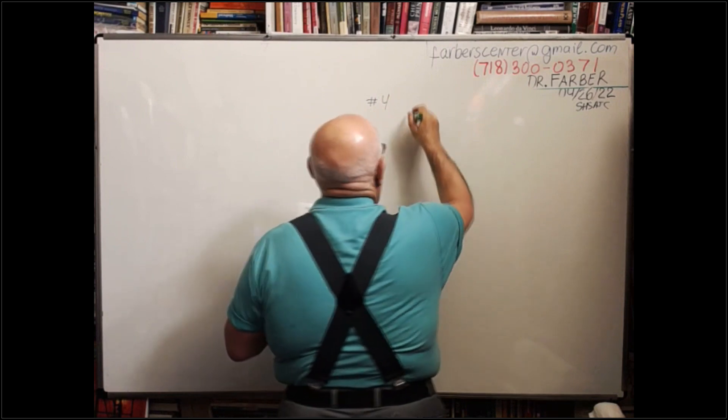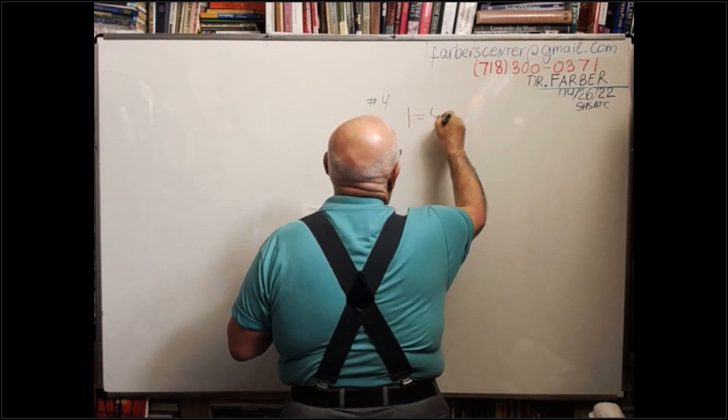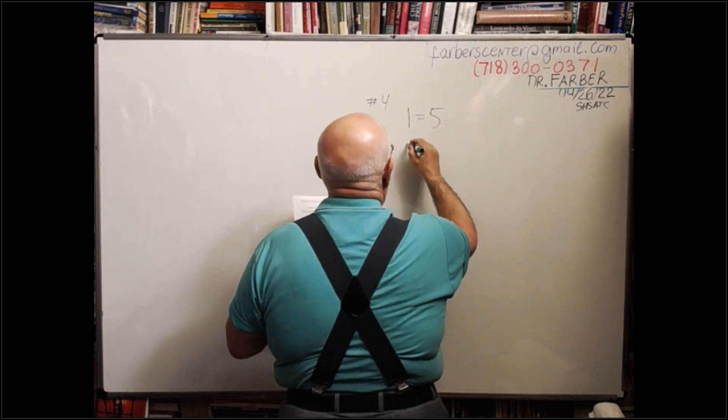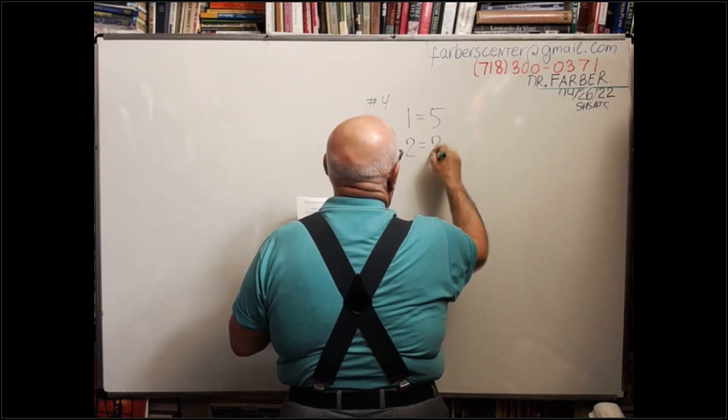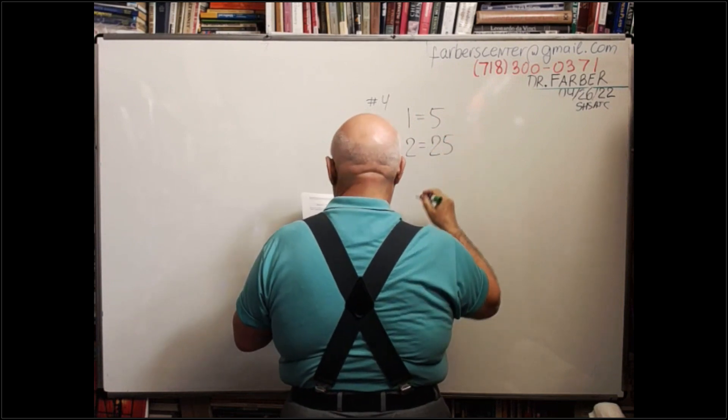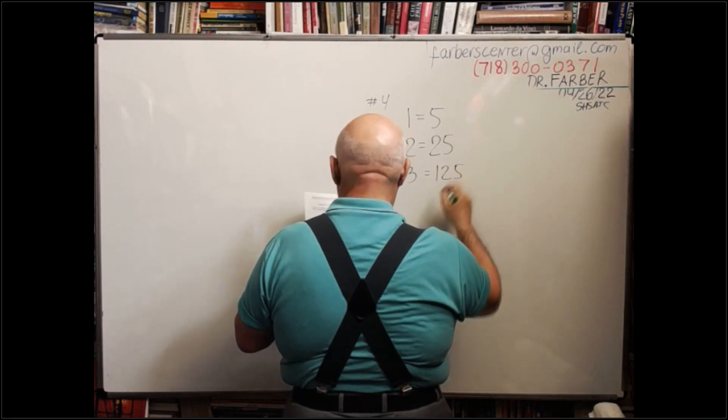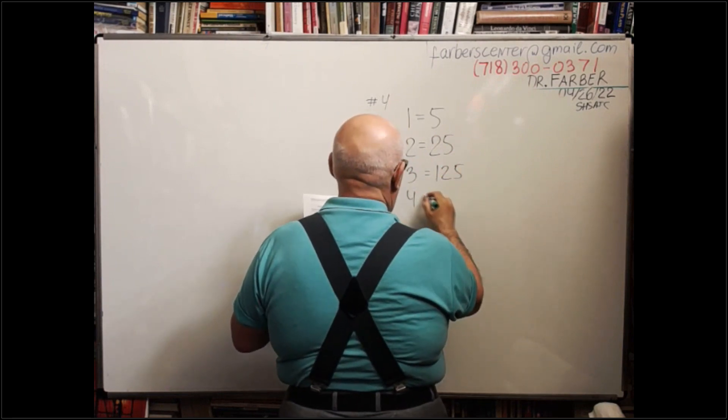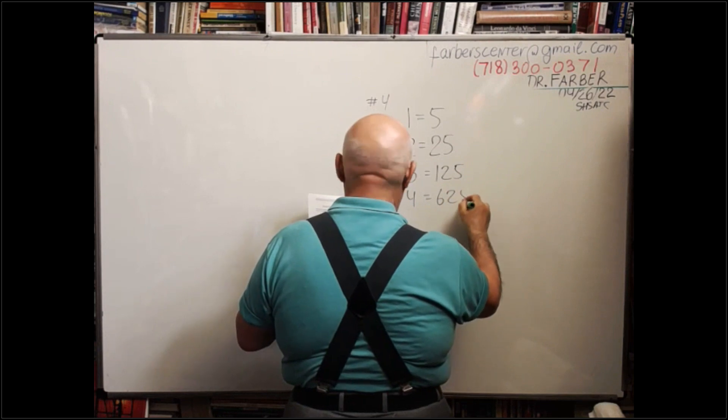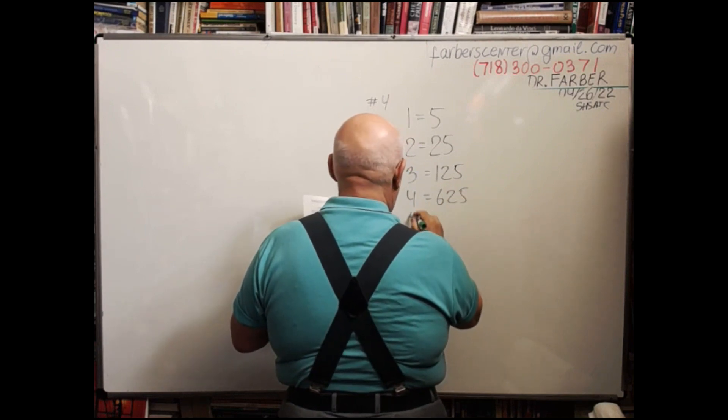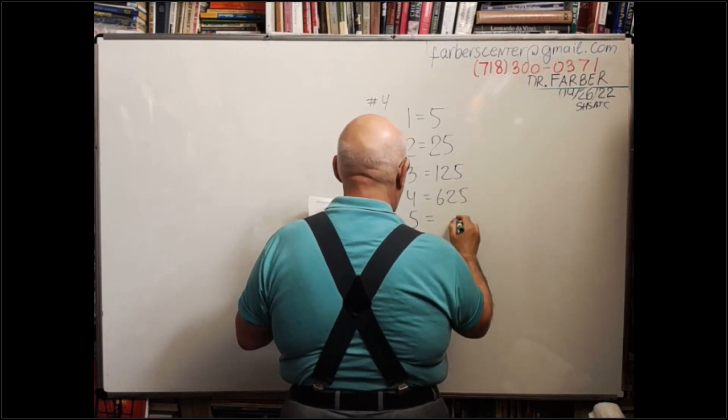Write down: 1 equals 5, 2 equals 25, 3 equals 125, 4 equals 625, and 5 equals question mark.